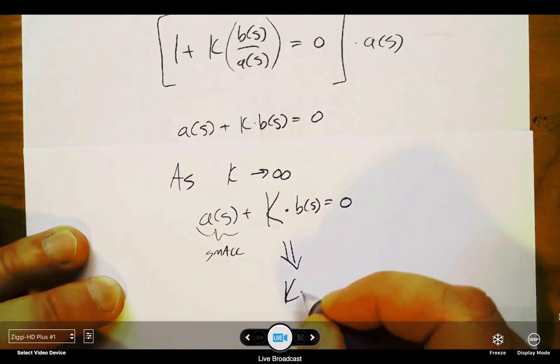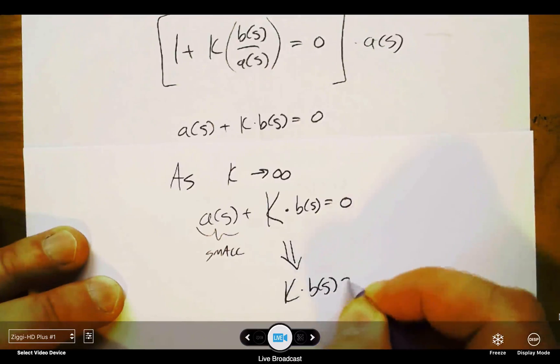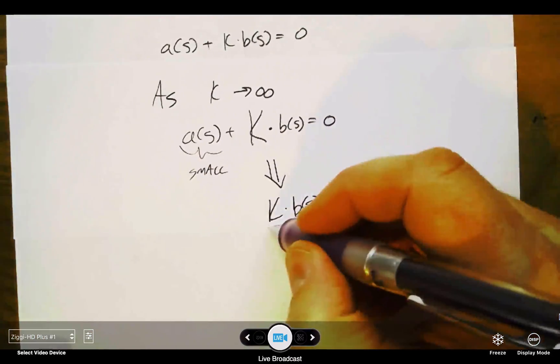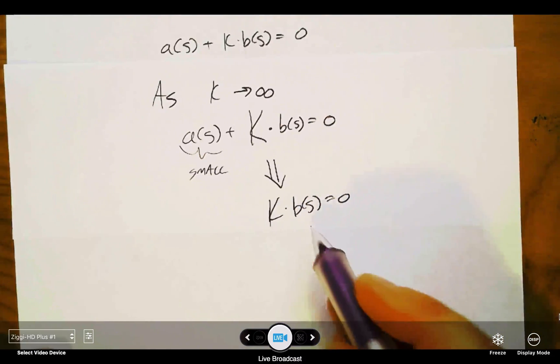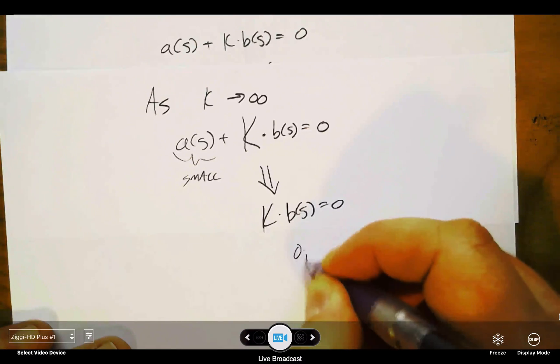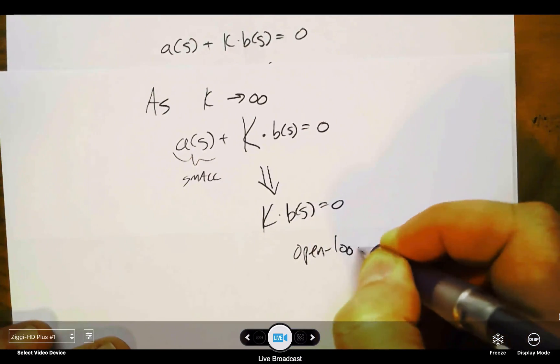So this would be approximately the same as just really large k times b(s) equal to zero. So in that case, the roots of this are just the roots of b(s). So these are the open-loop zeros.